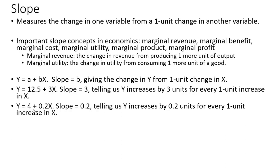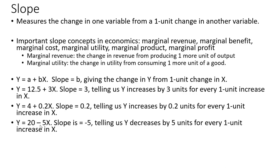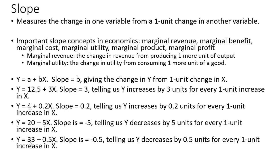Another example: y equals 4 plus 0.2x. Here the slope is 0.2, telling us y increases by 0.2 units for every one unit increase in x. Here, y equals 20 minus 5x — the slope is negative, it is minus 5, telling us y decreases by five units for every one unit increase in x. And if y decreases by five units for every one unit increase in x, we can surmise that y would decrease by ten units for every two unit increase in x.